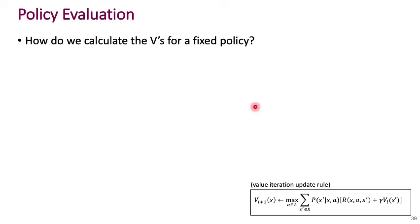Next we look at an alternative called policy iteration, which involves policy evaluation as a subroutine — simply computing the value function corresponding to a given policy. Remember, the value function is associated with a particular policy, and the optimal value function is the one associated with the optimal policy. There is a version of the Bellman equation for arbitrary policies, and just as we used the optimal Bellman equation in value iteration, in policy evaluation we use this arbitrary-policy version.